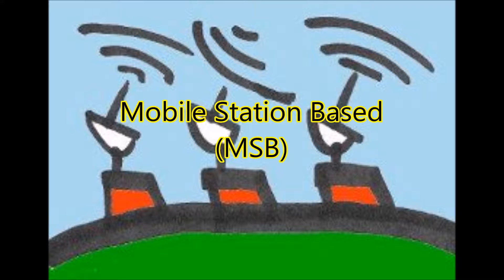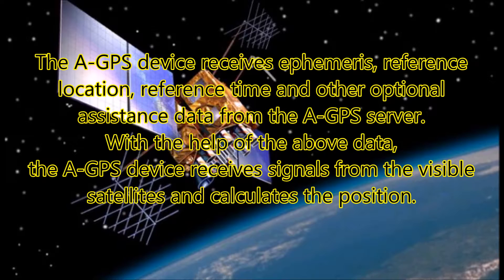Mobile Station Based (MSB): The AGPS device receives Ephemeris, reference location, reference time, and other optional assistance data from the AGPS server. With the help of the above data, the AGPS device receives signals from the visible satellites and calculates the position.